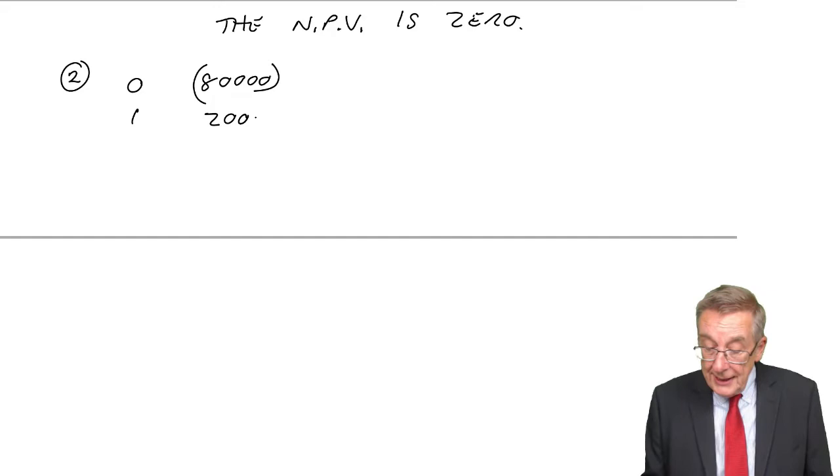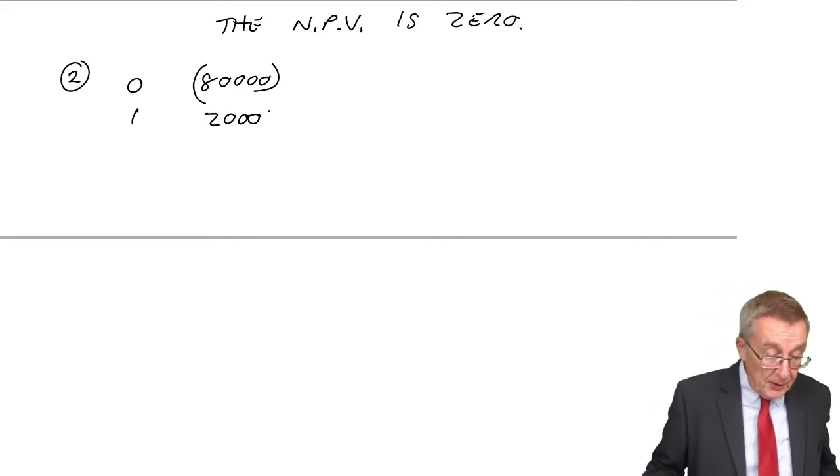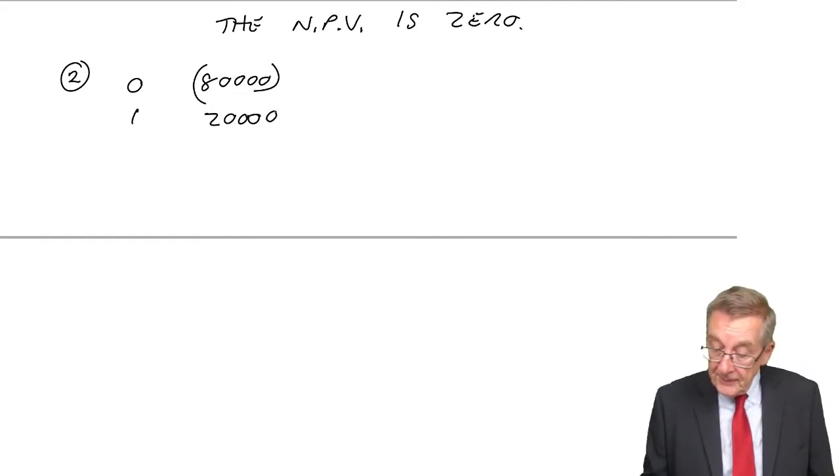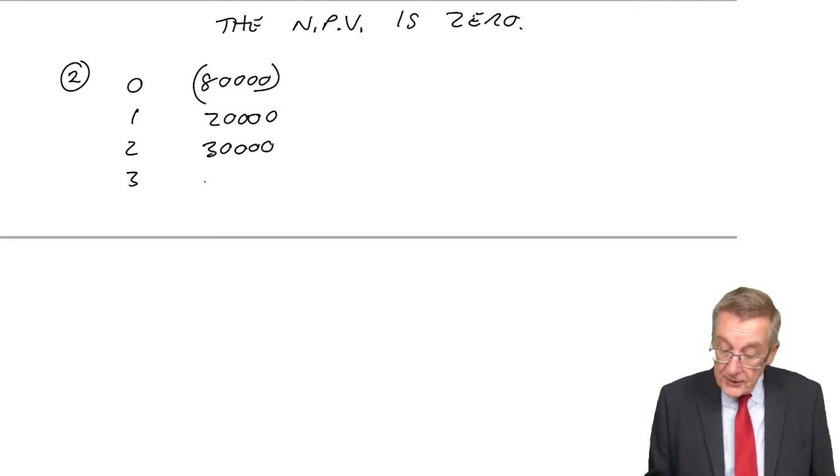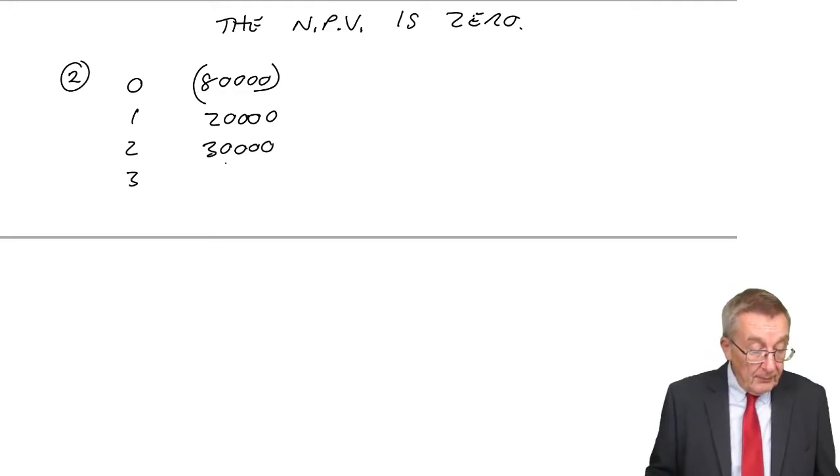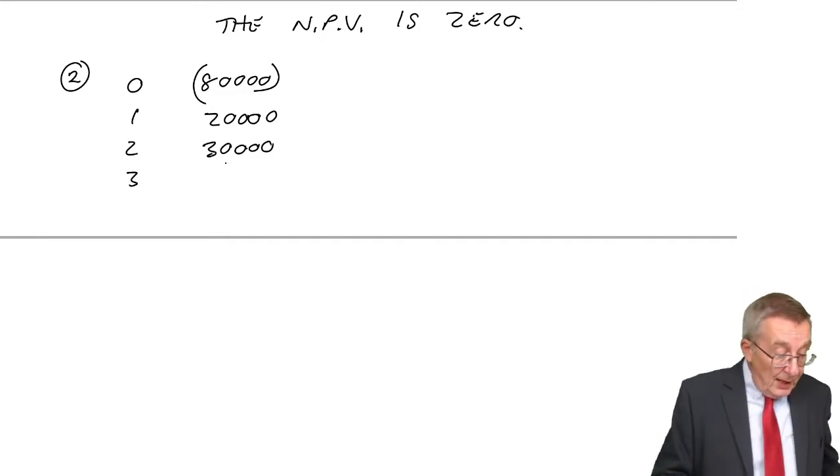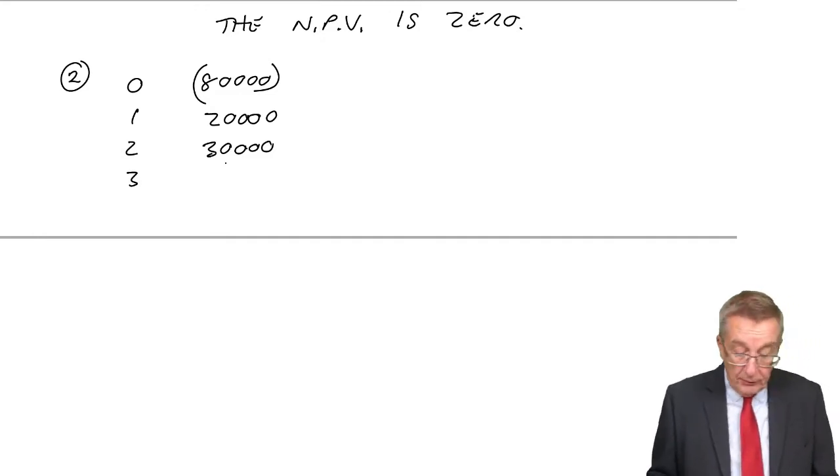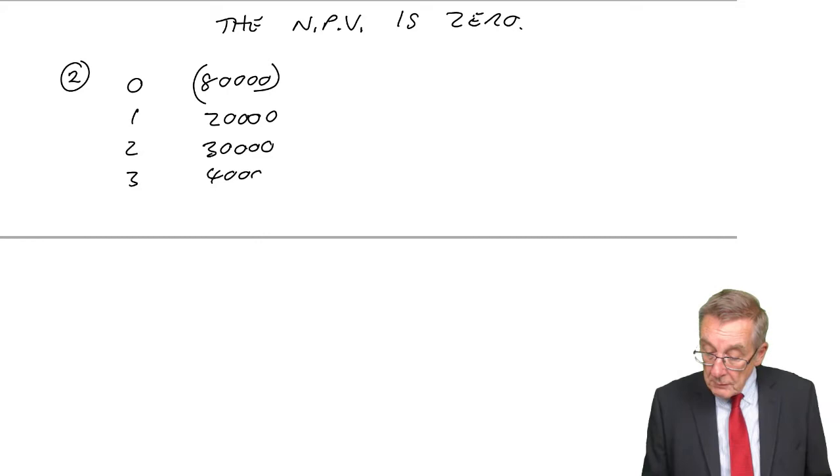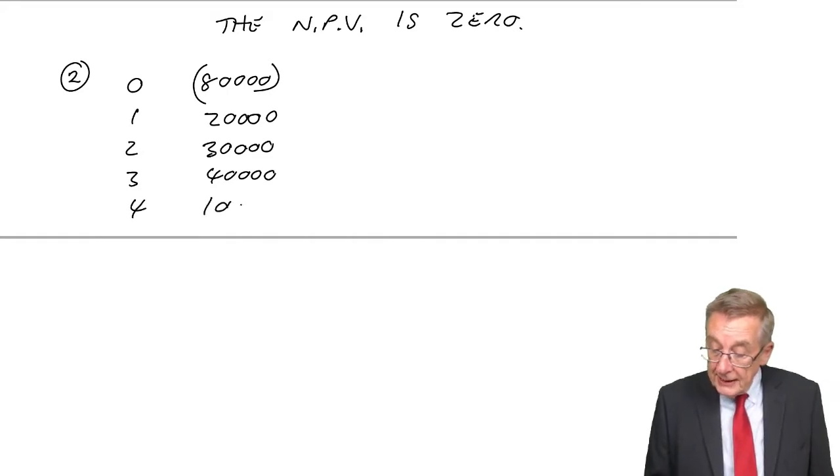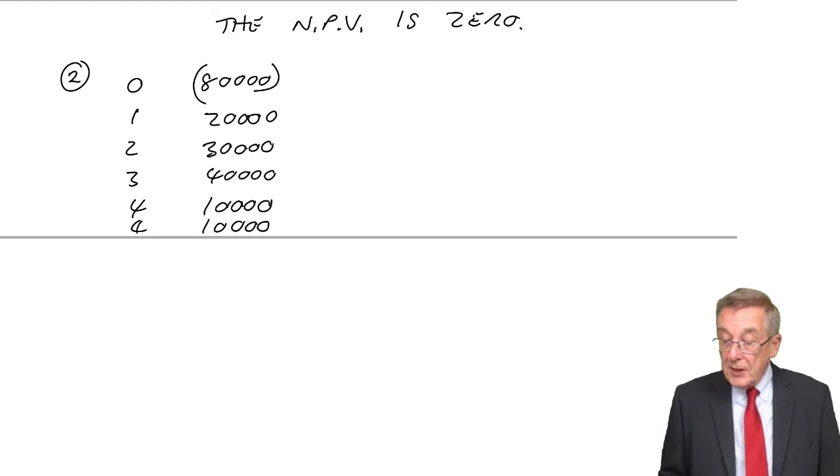What were the flows? There was an outflow of 80,000 at time zero. Same project. An inflow of 20 in one year and two years, 30. In three years, 40. In four years, 10. But remember, in four years, another 10, the scrap proceeds.